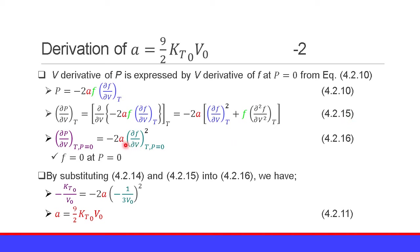At zero pressure, the left side is (∂P/∂V) at P = 0, and the right side is minus 2A times (∂f/∂V)^2, because the second term vanishes since finite strain f equals 0 at P = 0. The violet part equals minus KT0/V0, and the blue-green part is minus 1/(3V0). Simplifying, we obtain A equals (9/2) KT0 V0. Equation 4.2.11.